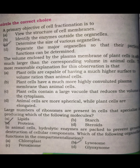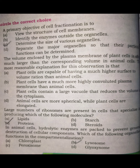What happens in cell fractionation? We separate all the organelles on the basis of their density, on the basis of their size, on the basis of their composition. One option says to determine the size of various organelles. Cell fractionation means that the components divide and separate on the basis of their size. The second option relates to volume.